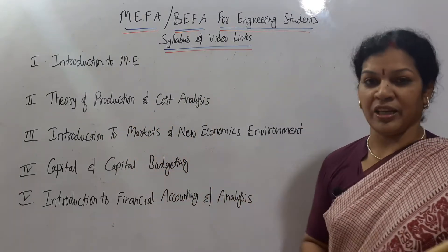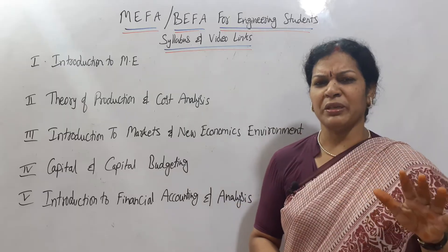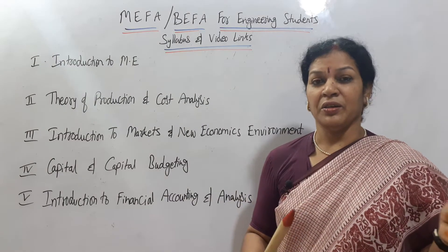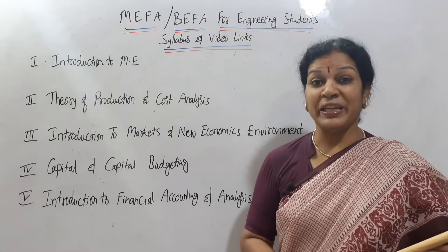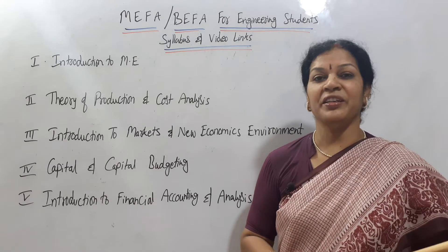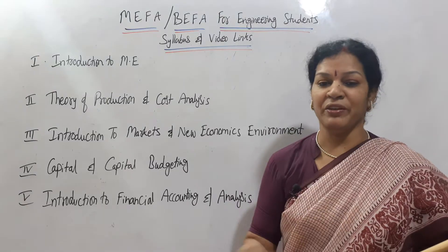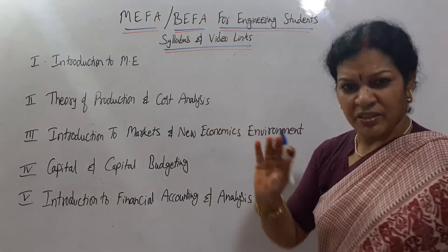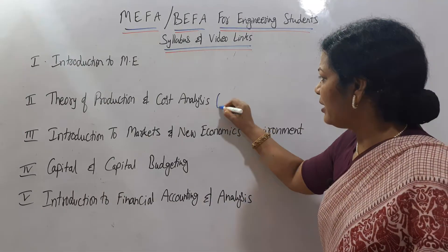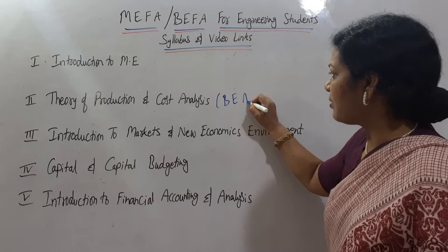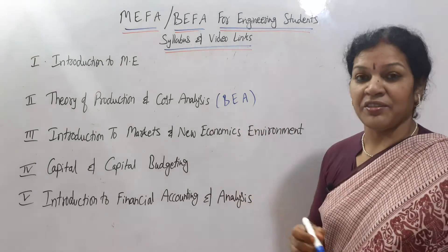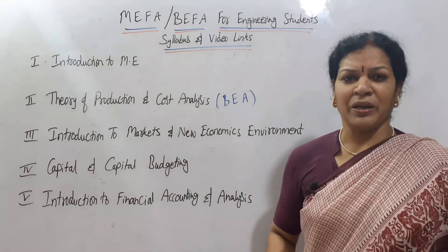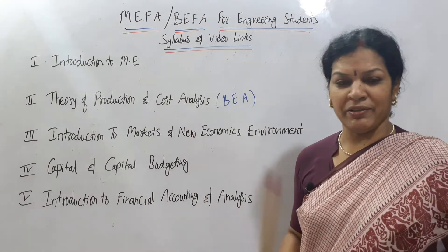The second unit is Theory of Production and Cost Analysis. This also covers basics of economics like what is short-run cost. One very important concept here is BEP — Break-Even Analysis. It is a mandatory and must-do topic for everyone. Break-Even Analysis is included in this second unit along with theory content, and I will give you a link where you will also find Break-Even Analysis.